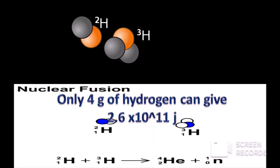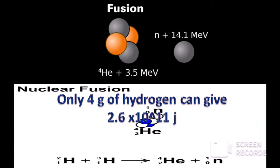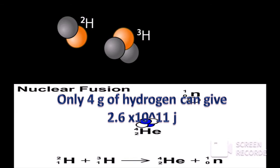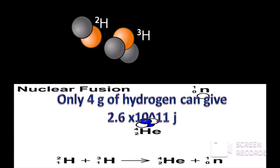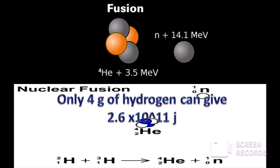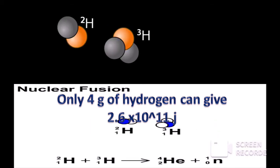Two hydrogen nuclei fuse to give a single helium nucleus and energy. Only 4 grams of hydrogen can give 2.6 × 10^11 joules of energy.